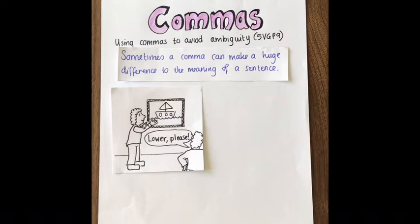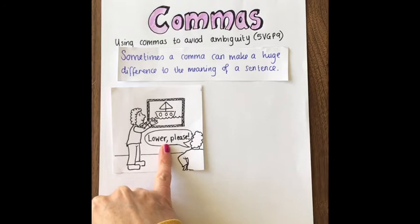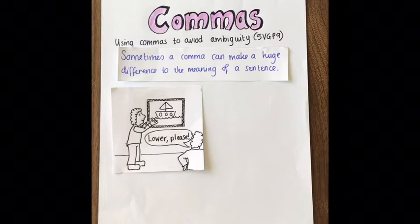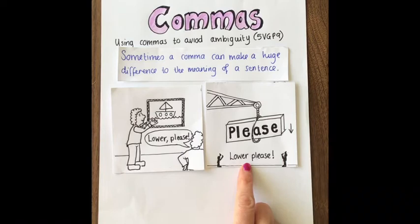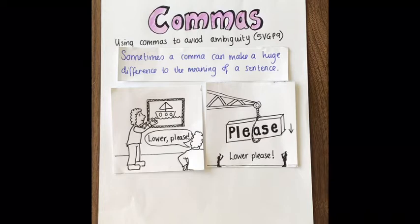Let's look at this first illustration. We've got two people hanging a picture; one is saying to the other 'lower, please,' indicating that they want the picture hung lower. The comma is placed after the word 'lower.' If we miss that comma out, we could have a completely different meaning — 'lower please' makes it sound like we want the word 'please' lowered towards the ground, which isn't what's meant at all.